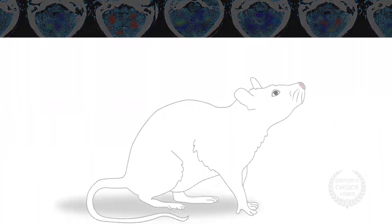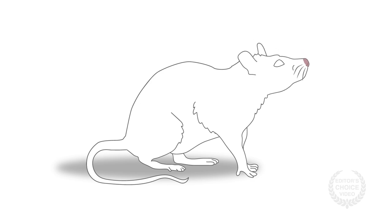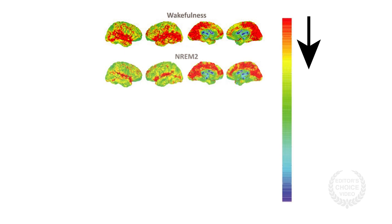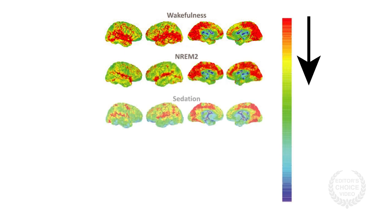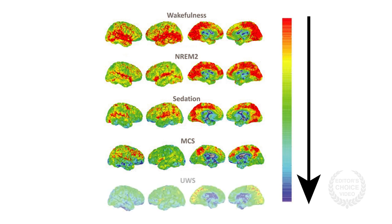They also performed new fMRI experiments in propofol-anesthetized rats. The group observed gradual reductions in brain activity coordination with reduced consciousness, such as the lighter stages of sleep, sedation, and the minimally conscious state. More profound reductions occurred in truly unconscious states.